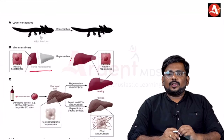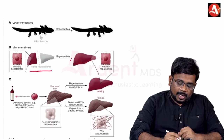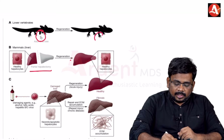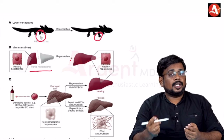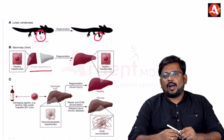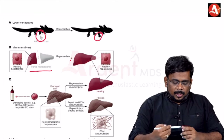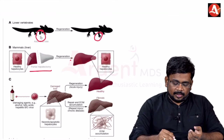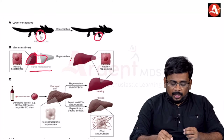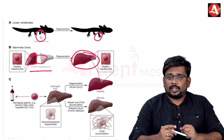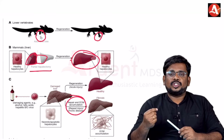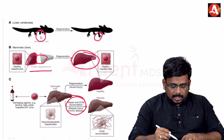The best example of regeneration is the lizard — if its tail is cut, the same architecture and function is restored. For higher animals like mammals and humans, if the liver is damaged and healthy liver tissue regenerates with the same architecture and function, that is also regeneration. However, if continuous injury occurs, regeneration does not happen — that is an important point to remember.